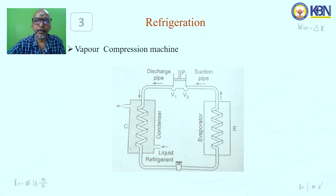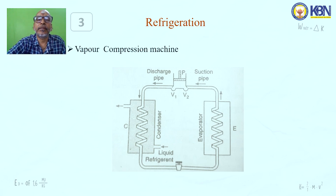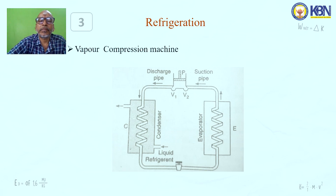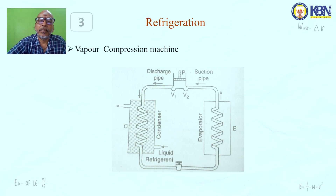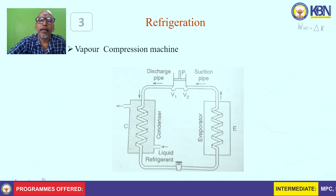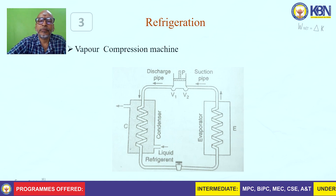Refrigeration means a refrigerator is an instrument or chamber that produces a temperature below its surroundings and maintains it at a constant low temperature. The figure represents the refrigeration system. There is a compressor represented by piston P, with two valves V1 and V2 at the bottom. There are two chambers — a condenser and an evaporator — along with a regulator valve, a discharge pipe, and a suction pipe.